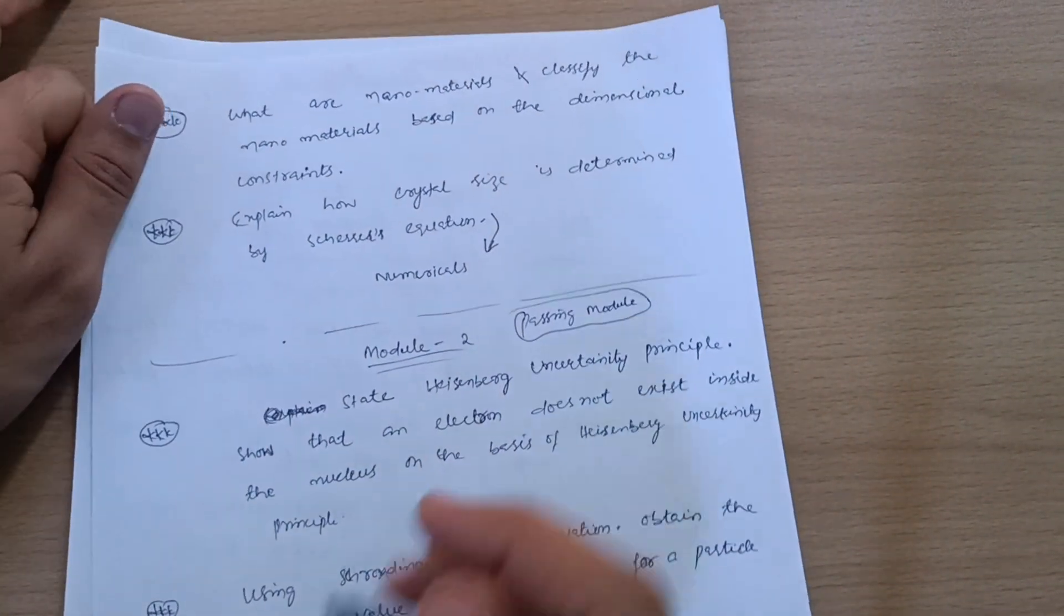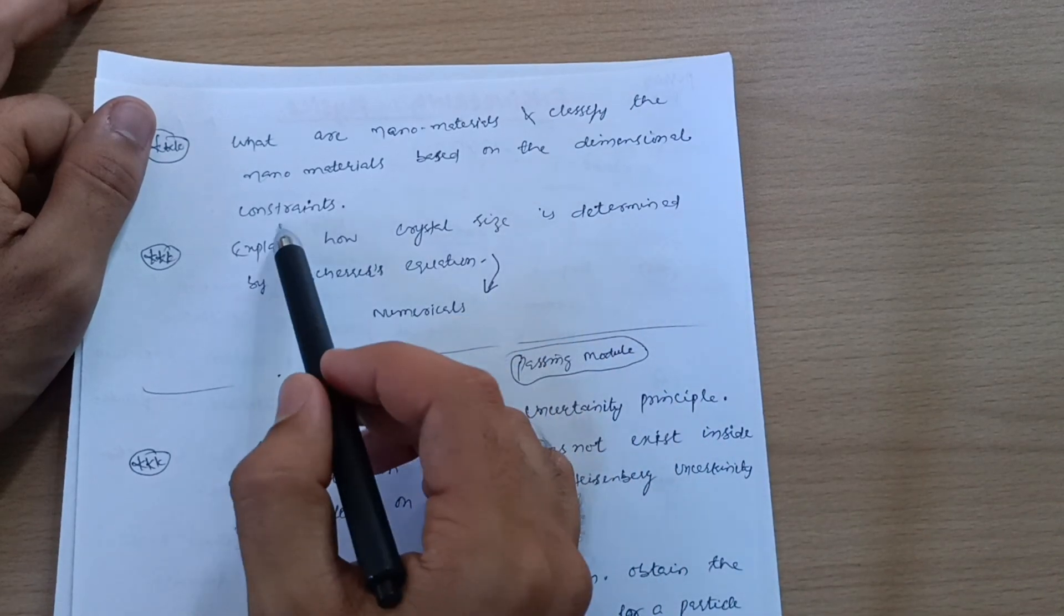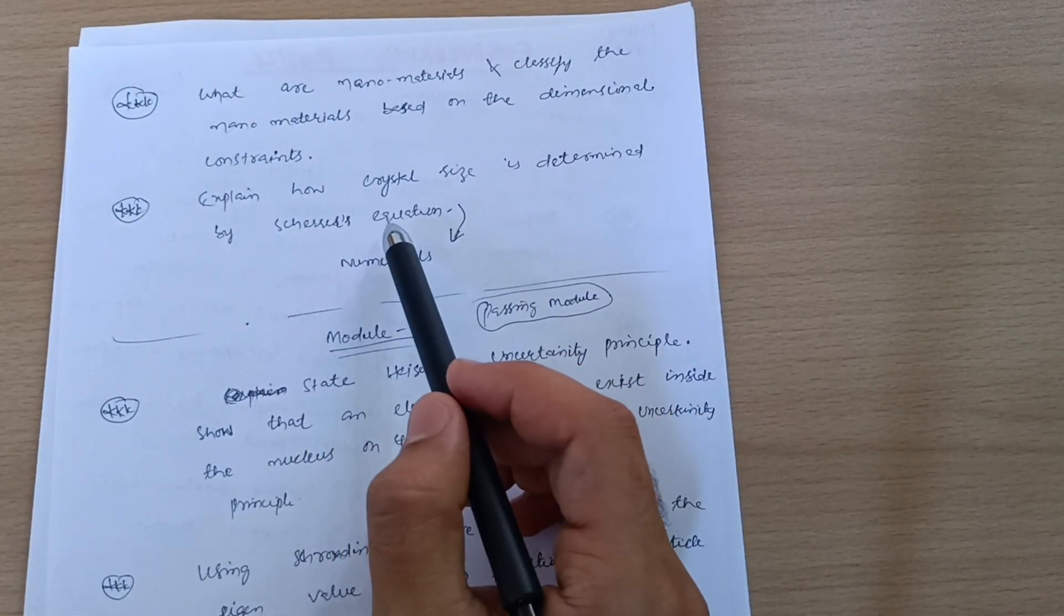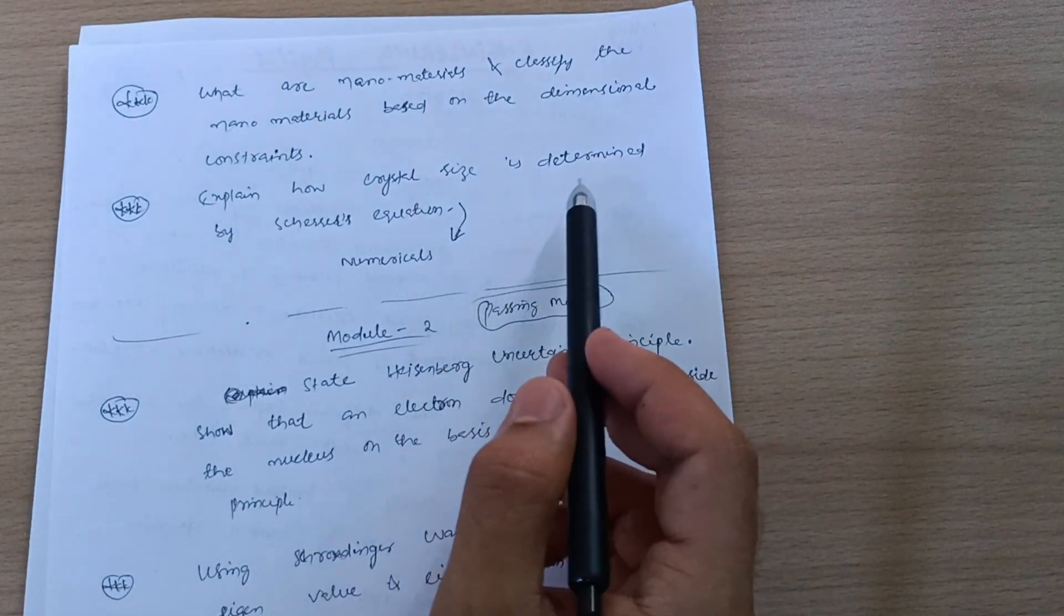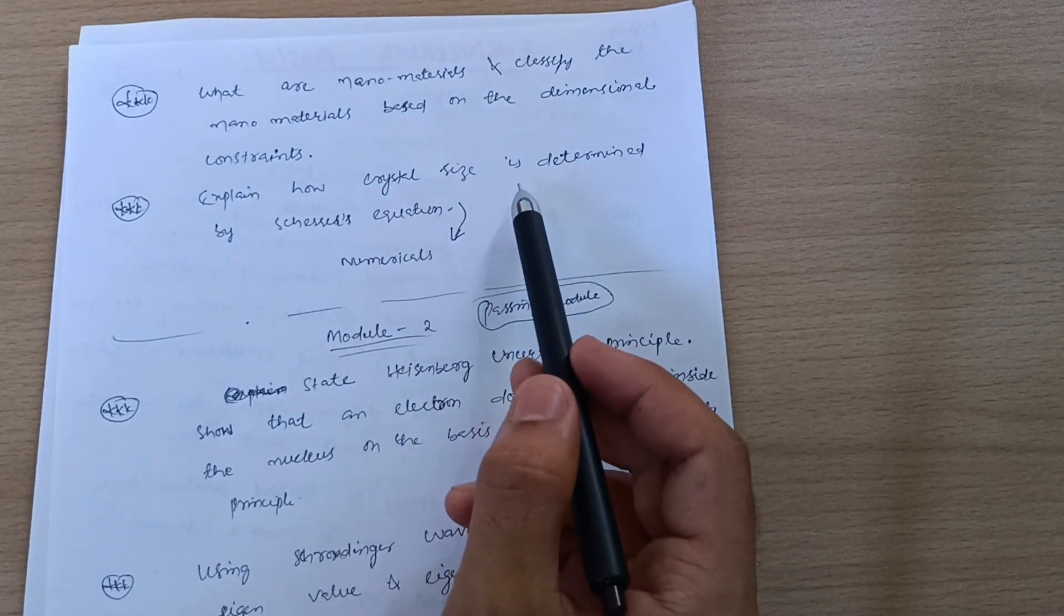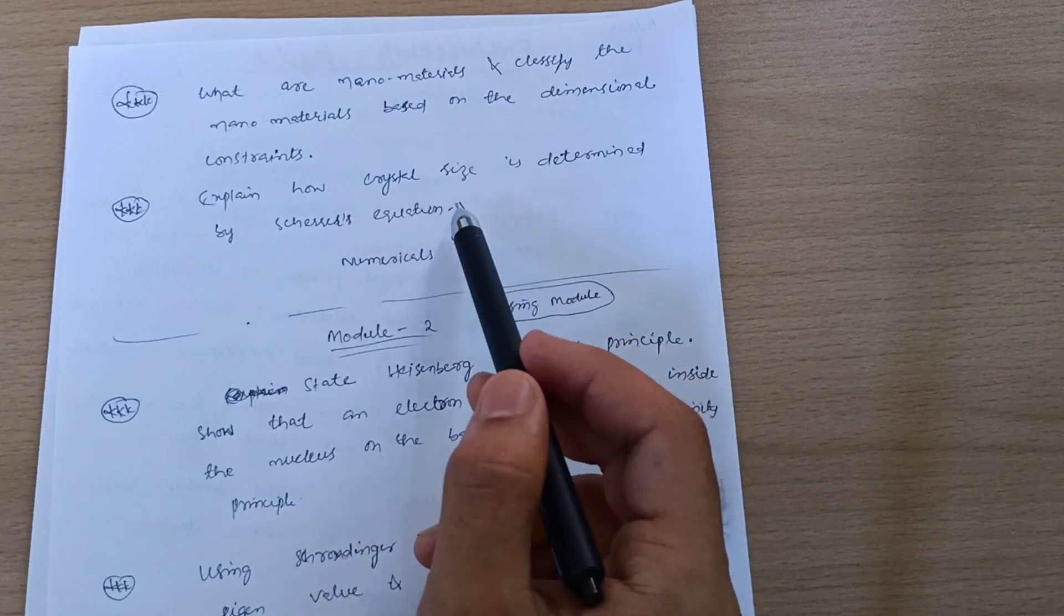Next is, what are nanomaterials and classify the nanomaterials based on dimensional constraints? Explain how crystal size is determined by Scherrer's equation. Go through this derivation part and also numericals on that particular derivation, which are very easy ones. I have made one video for this crystal size determination, so link will be available in the description.